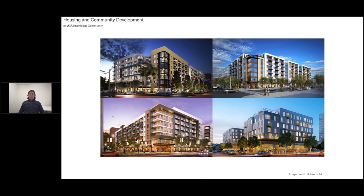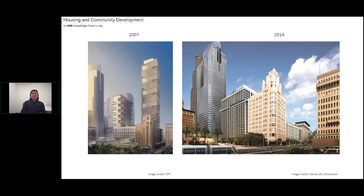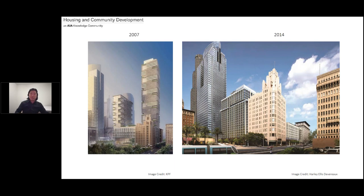In LA, a debate emerged as the city and community started to express concerns about this new housing type, and there were some policies aimed towards prohibiting podium construction in downtown LA. Going back a little bit, downtown LA has been primarily a central business district since the advent of automobiles, when freeways went in and there was a suburban flight from downtown. In 1999, Los Angeles passed the Adaptive Reuse Ordinance, which made it easier for older buildings in downtown LA to be converted into lofts.